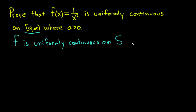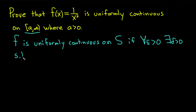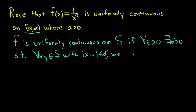So f is uniformly continuous on s if — I'm going to use some shorthand notation — for all epsilon greater than 0, there exists a delta greater than 0, such that for all x, y in our set s, with the distance between x and y being smaller than delta, we have that the distance between f of x and f of y is less than epsilon. This definition is really important.